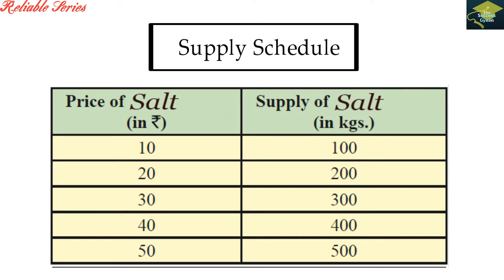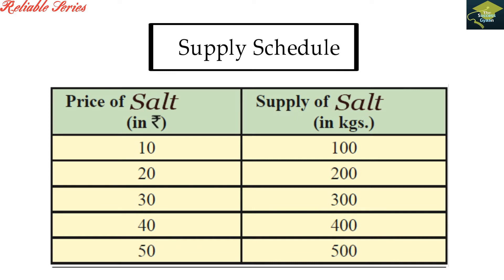इस supply schedule में एक side price of salt है और दूसरी side quantity supplied of salt. जब salt का price 10 रुपीज per kg था, तब supplied quantity 100 kg थी. जब price बढ़कर 20 रुपीज हुआ, तो supplied quantity increase होकर 200 kg हो गई. Similarly, जब price 30 रुपीज हुआ तो 300 kg, 40 रुपीज पर 400 kg, और 50 रुपीज पर 500 kg.